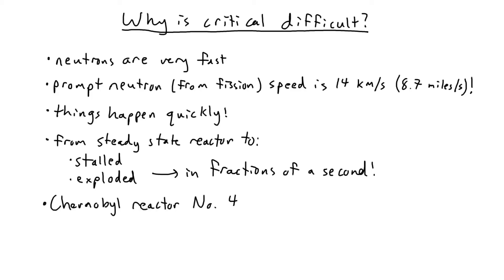For example, in the Chernobyl disaster, reactor number four went from a power output of 530 megawatts to likely well over 30,000 megawatts in a matter of moments, at least 10 times its maximum rated power output.